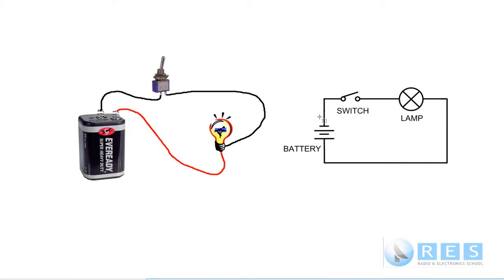We might have resistors with their resistance written on them and some other components, and the battery voltage could be written here. That's the equivalent circuit to the pictorial diagram on the left. When we close the switch, the circuit is made. The small terminal on the battery symbol is negative, and the longer terminal is positive.